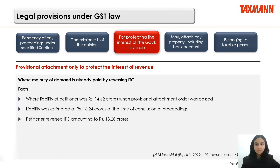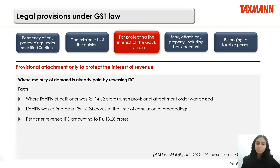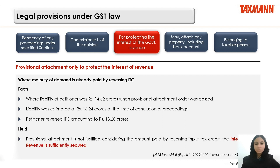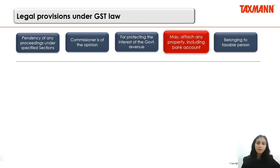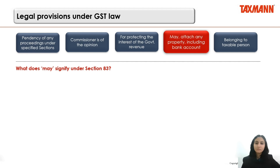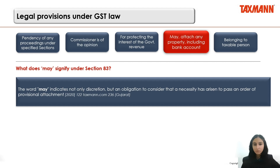In another case, the petitioner's liability was decided at ₹14.62 crores and re-estimated at ₹16.24 crores. The petitioner reversed his ITC amount up to ₹13.28 crores. The High Court decided that the interest of revenue was sufficiently secured when the petitioner reversed the ITC amount, so provisional attachment in such a case would not be justified. The word 'may' in Section 83 indicates not only discretion but also an obligation in cases where there is a necessity to attach the property.